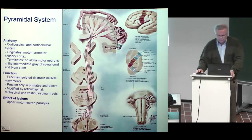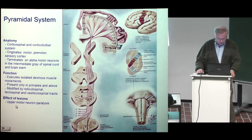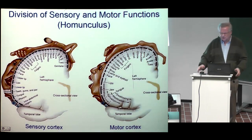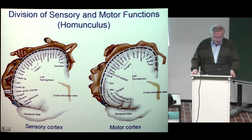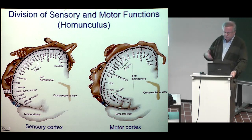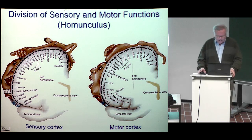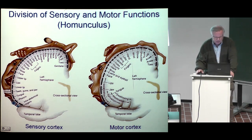The pyramidal system shows how this information is proceeding in the nervous system. This is the so-called homunculus. It describes which regions in the sensory cortex and in motor cortex are connected to certain corresponding regions in the body. Here is some quite basic but interesting information.